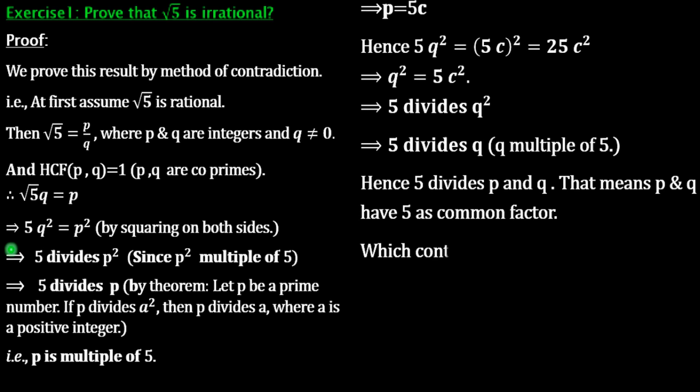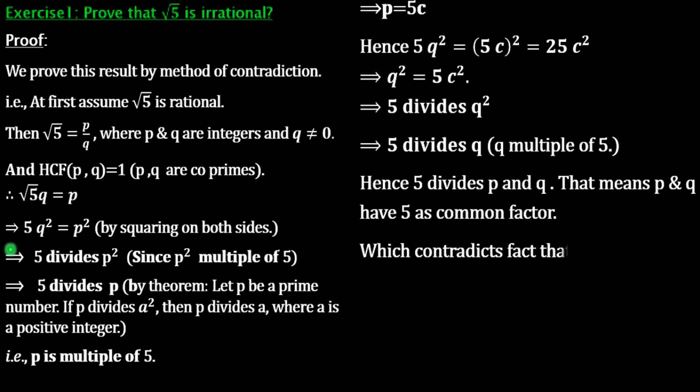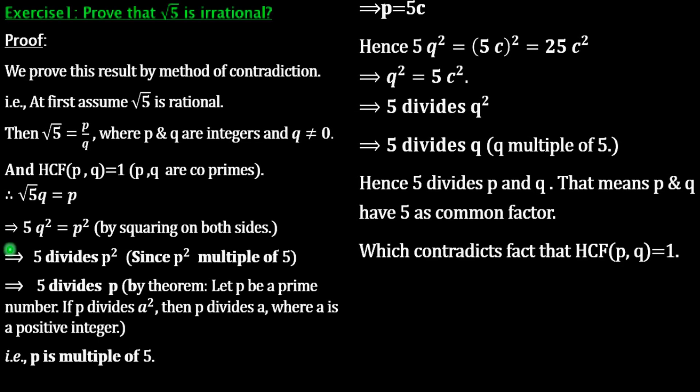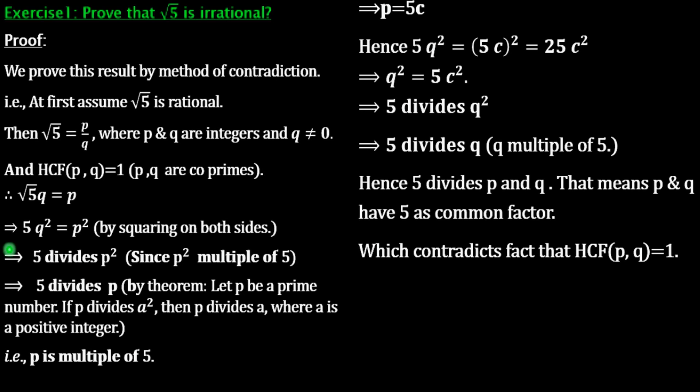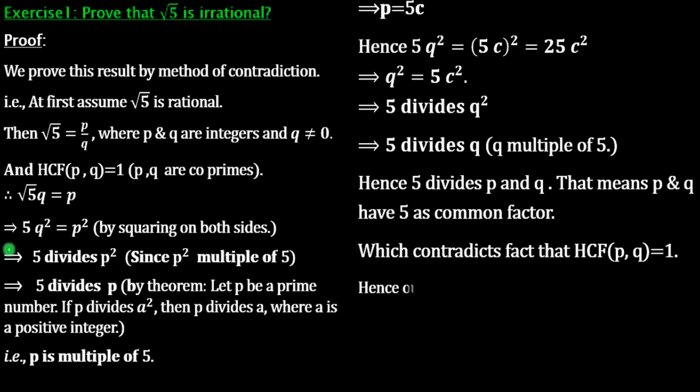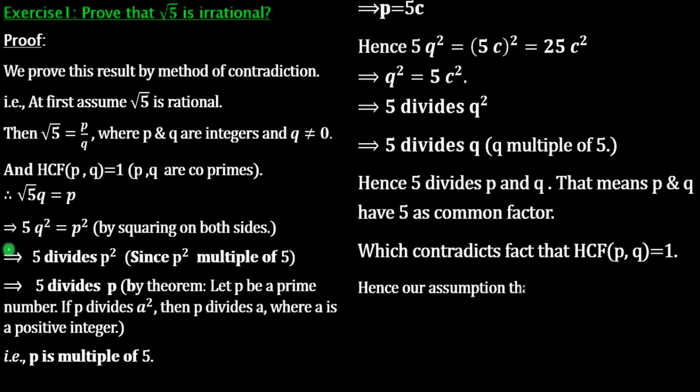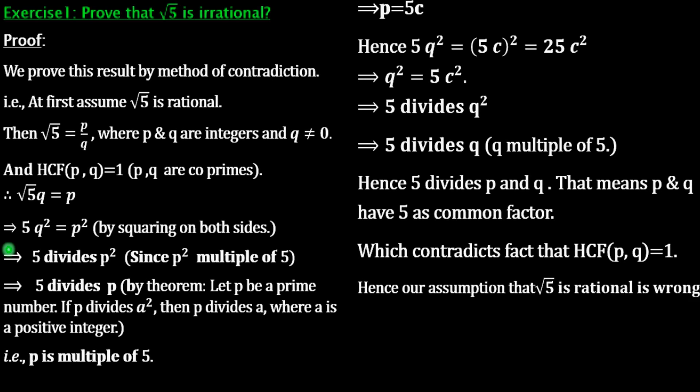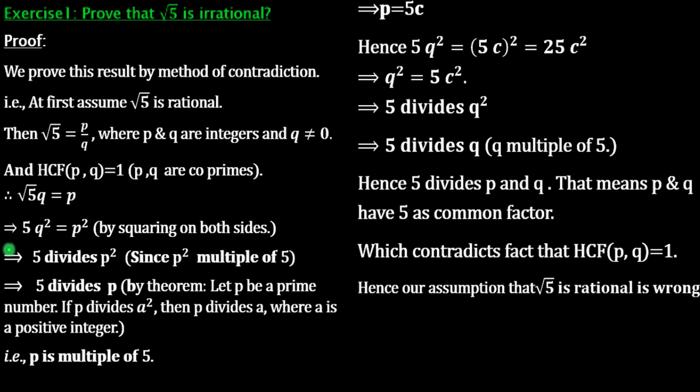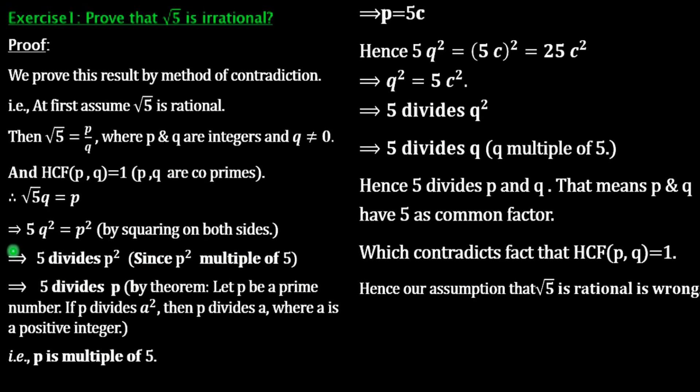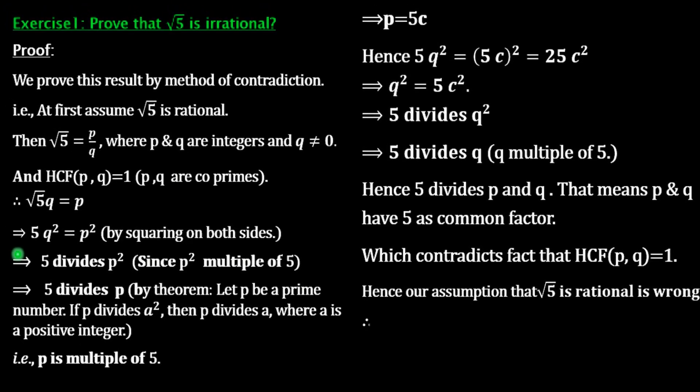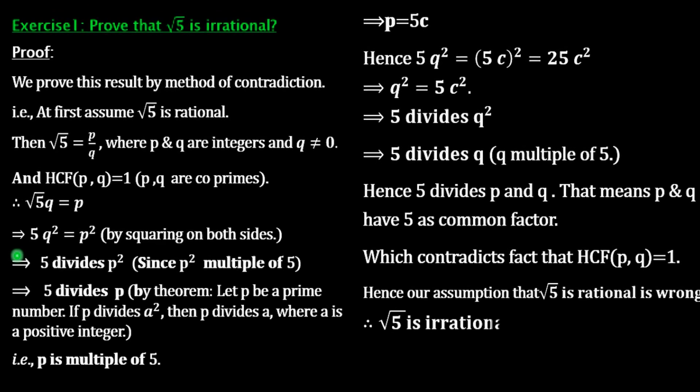Which is a contradiction to the fact that HCF of P and Q equals 1. It can be 5 or more than 5. So, our conclusion: hence our assumption that √5 is rational is wrong. Then what is the other result? √5 is an irrational number.